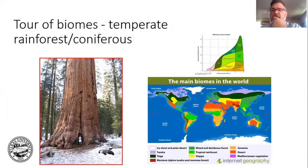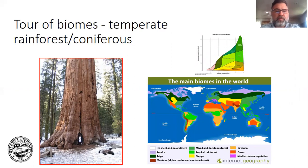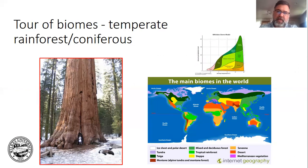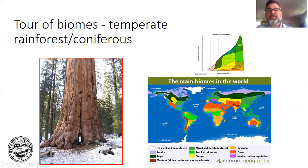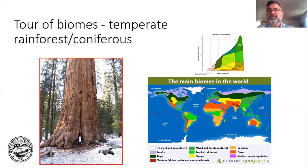Temperate rainforests — this doesn't show up in many classifications. Temperate rainforests occur on the windward side of a mountain range in the temperate zone. This has mild winters and mild summers. You'll find this in the Pacific Northwest, going up from coastal Alaska down to coastal California. It's very narrow but occurs over a wide range of latitudes.